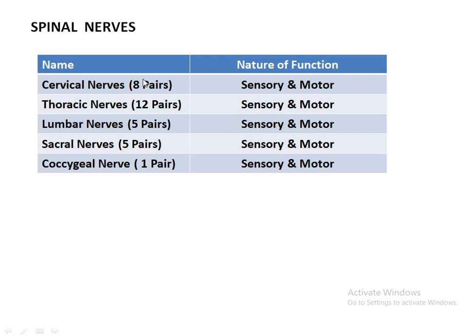We also have 31 pairs of spinal nerves, which are components of the peripheral nervous system — all sensory and motor in nature. There are 8 pairs of cervical nerves, 12 pairs of thoracic nerves, 5 pairs of lumbar nerves, 5 pairs of sacral nerves, and 1 pair of coccygeal nerves. In the next lecture, I will describe the different parts of the brain.